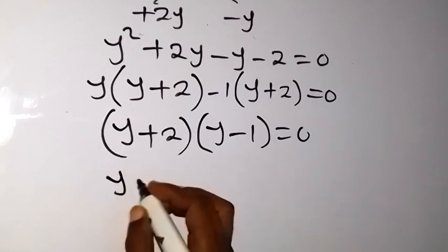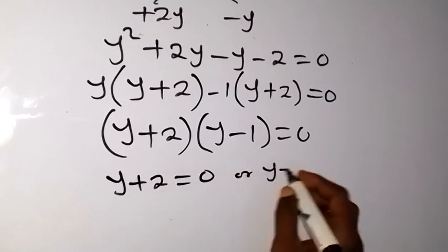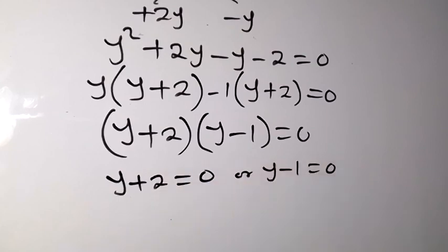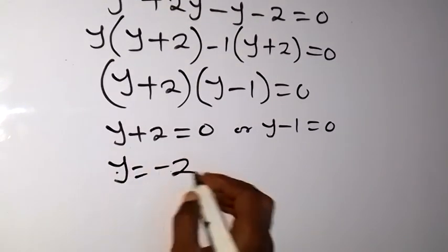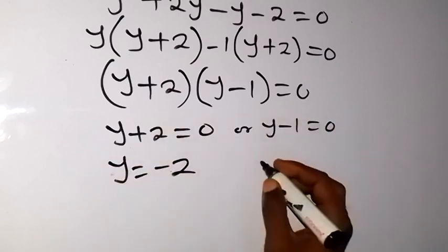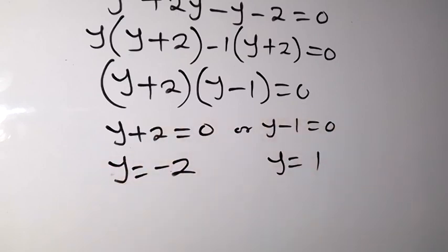Each of these could be zero. So we have y plus 2 equals to zero, or y minus 1 equals to zero. From here, y equals to minus 2, and from here, y equals to 1.